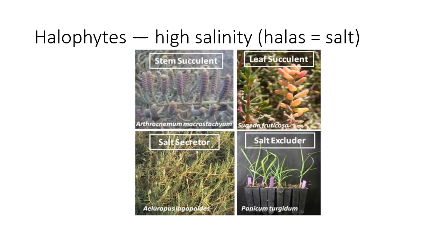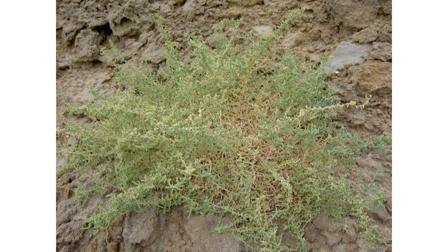Halophytes are those species which possess fleshy plant organs with succulent leaves and stems. In certain areas like the Arabian Sea there are mangroves, which possess pneumatophore roots — special air roots which grow directly into the air and have many lenticels allowing entry of oxygen. In saline-sodic lands you may see Suaeda fruticosa, shown here, which are succulent in nature and accumulate potash or sodium salts. This is Salsola imbricata.